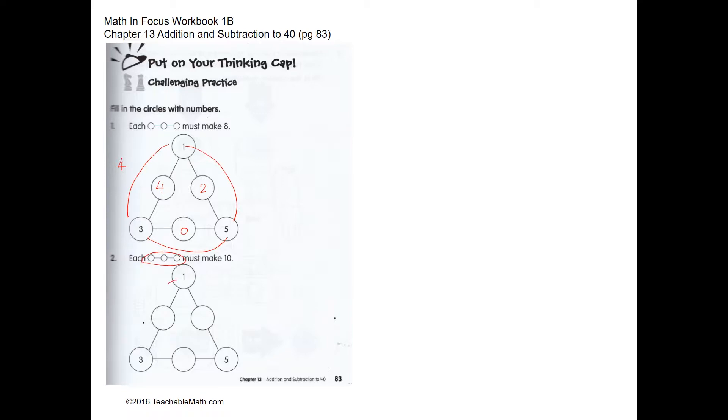Question two. Now each row must make ten. Over here we have four, so we need six more to make ten. Over here we have eight, so we need two more to make ten. Over here we have six.